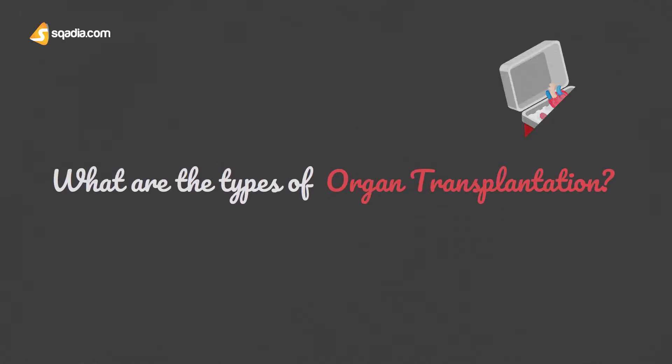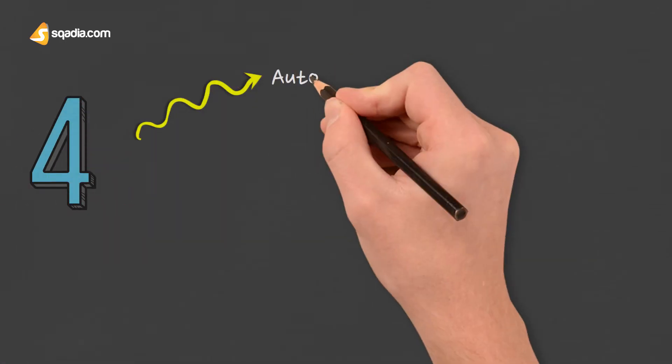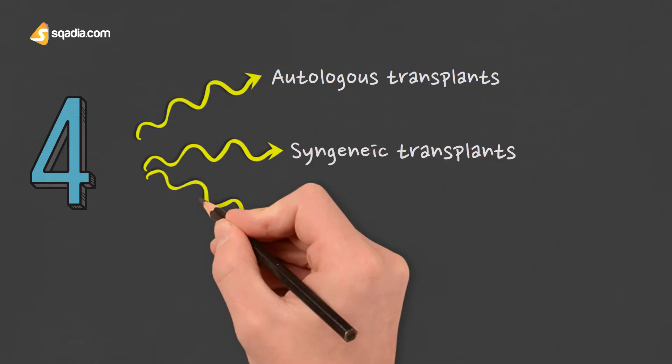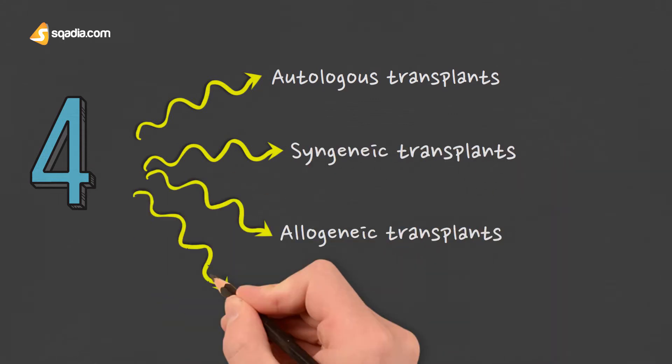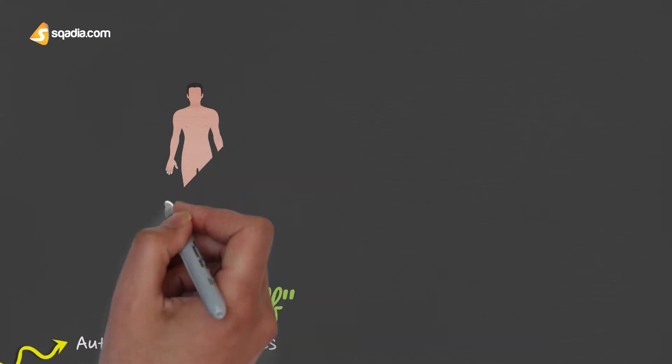What are the types of organ transplantations? There are mostly four different types: autologous transplants, syngenic transplants, allogenic transplants, and xenogenic transplants. Autologous transplants are also called autografts. Auto meaning self in Greek, the transfer of tissue or organ from one site to another within the same organism is called autografting.